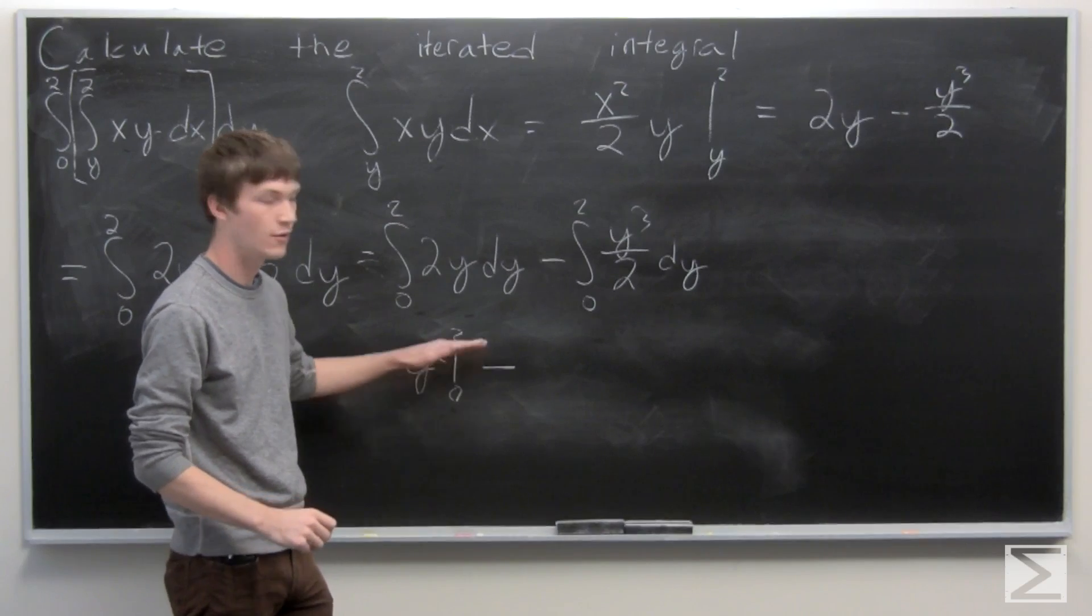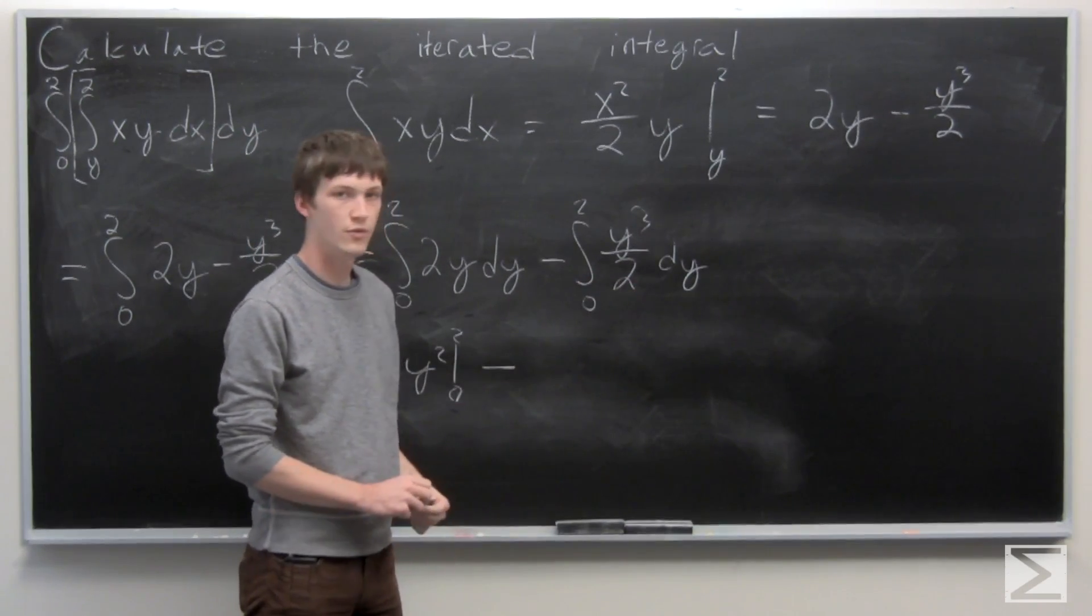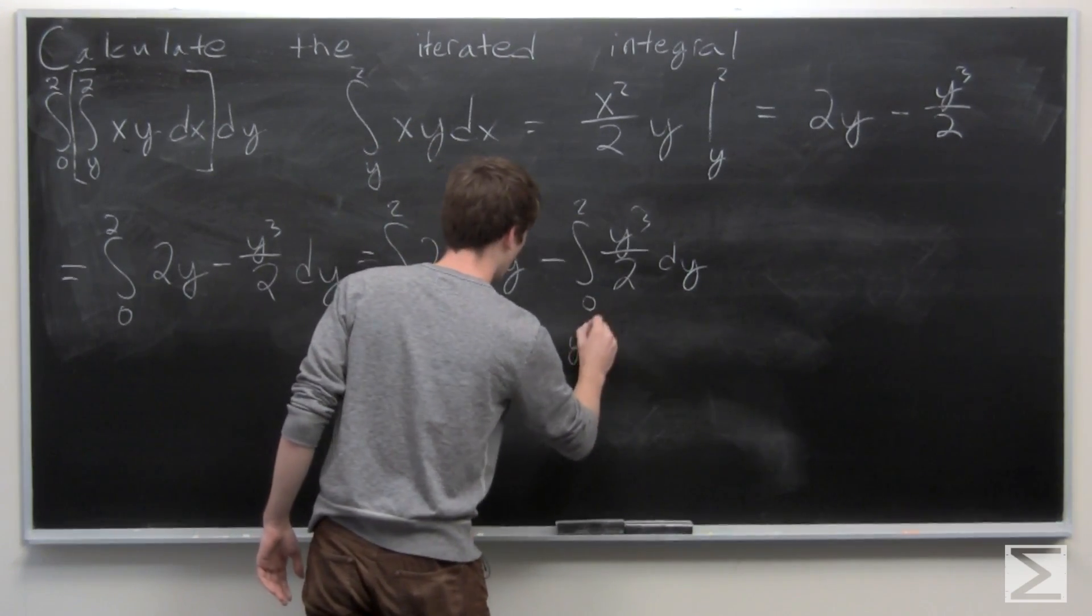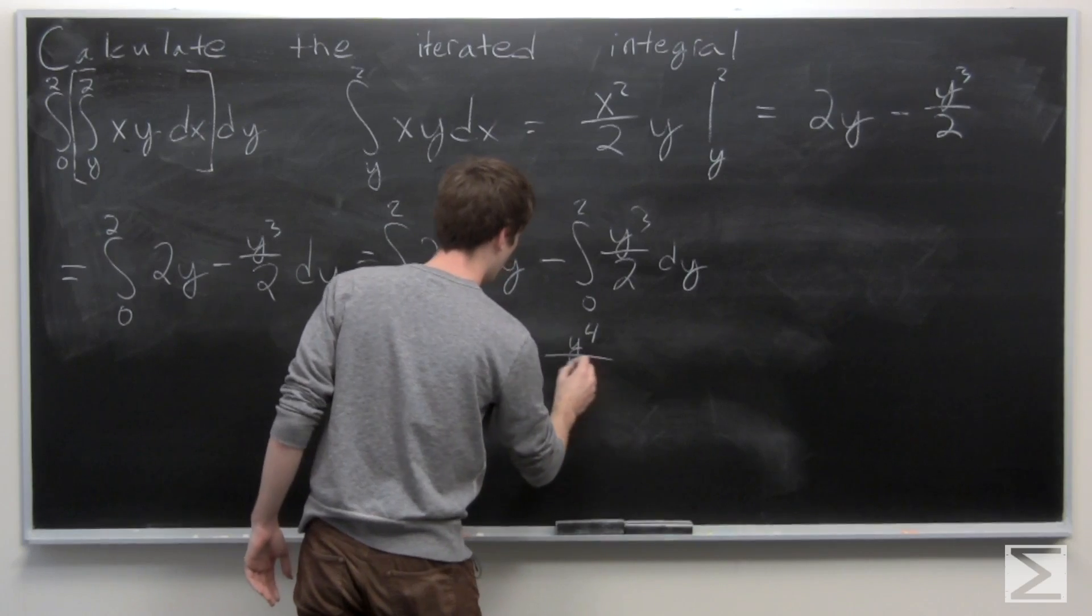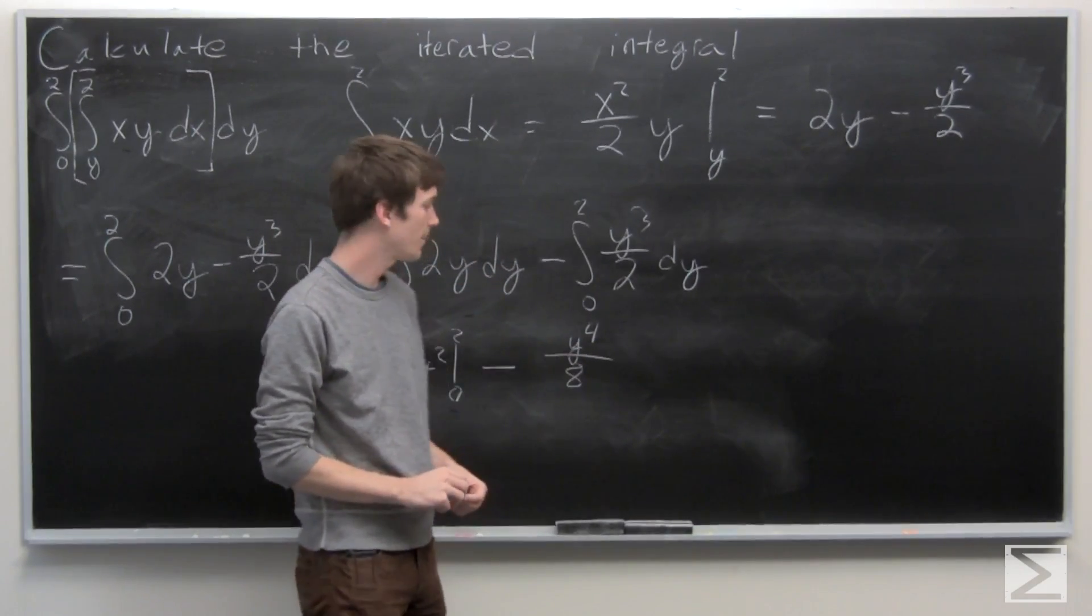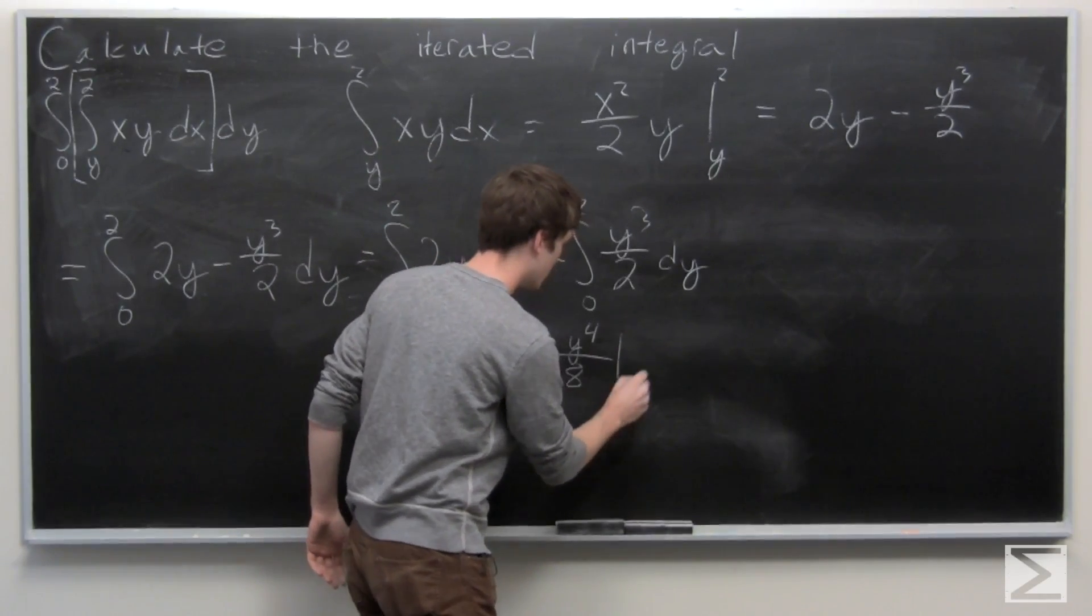Minus the integral of y cubed over 2 which is y to the fourth over 8, and again we're evaluating that from 0 to 2.